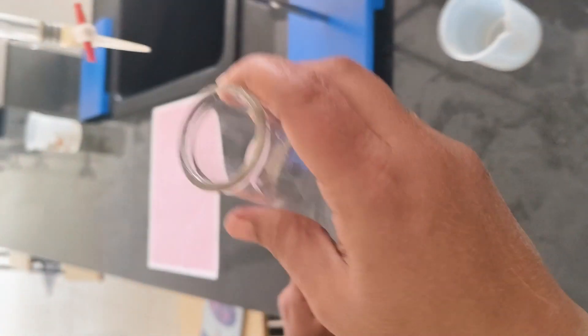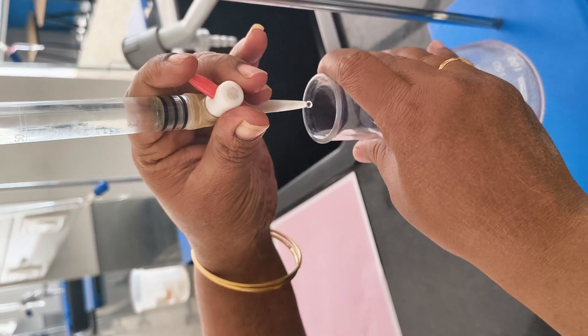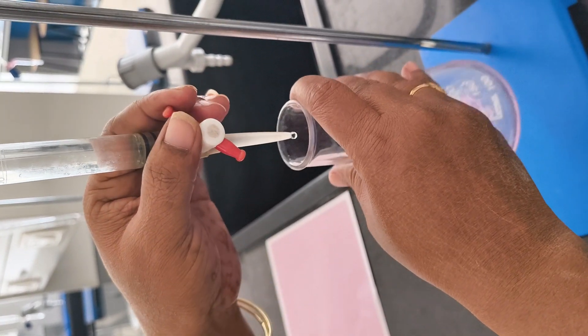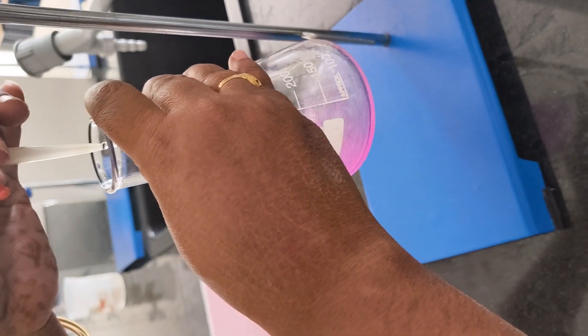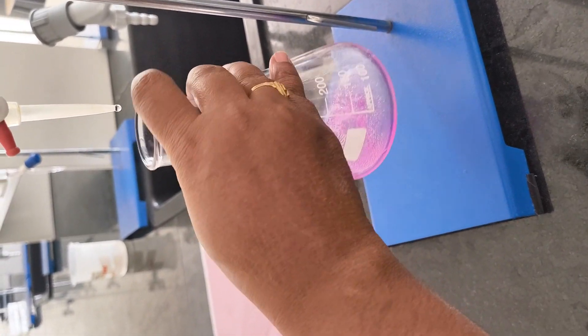Then it is titrated against sodium hydroxide solution. Sodium hydroxide solution is taken in the burette. So while doing the titration, here we are getting pink color. So pink color is our endpoint.